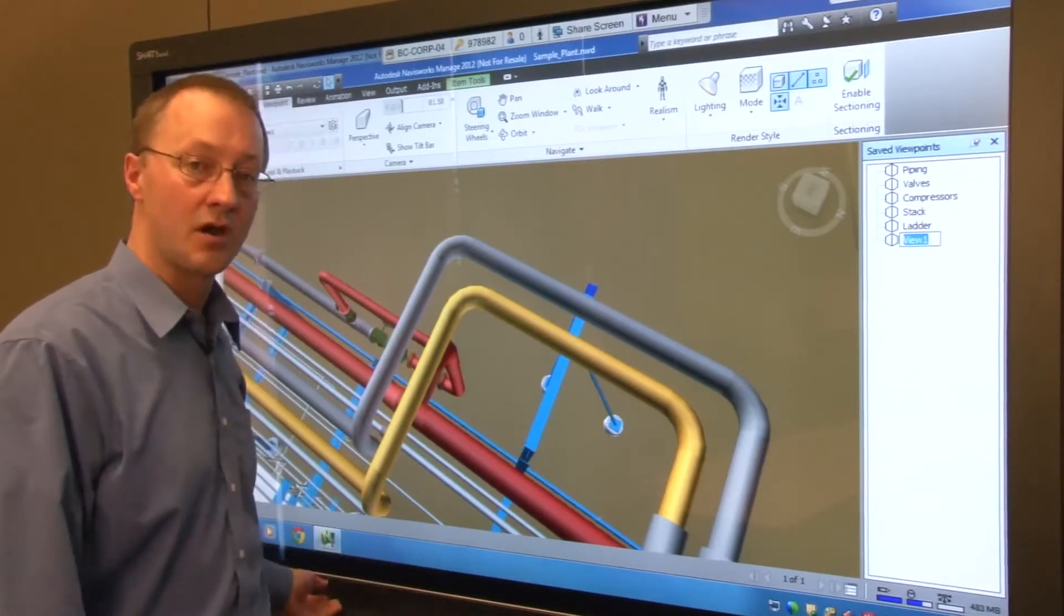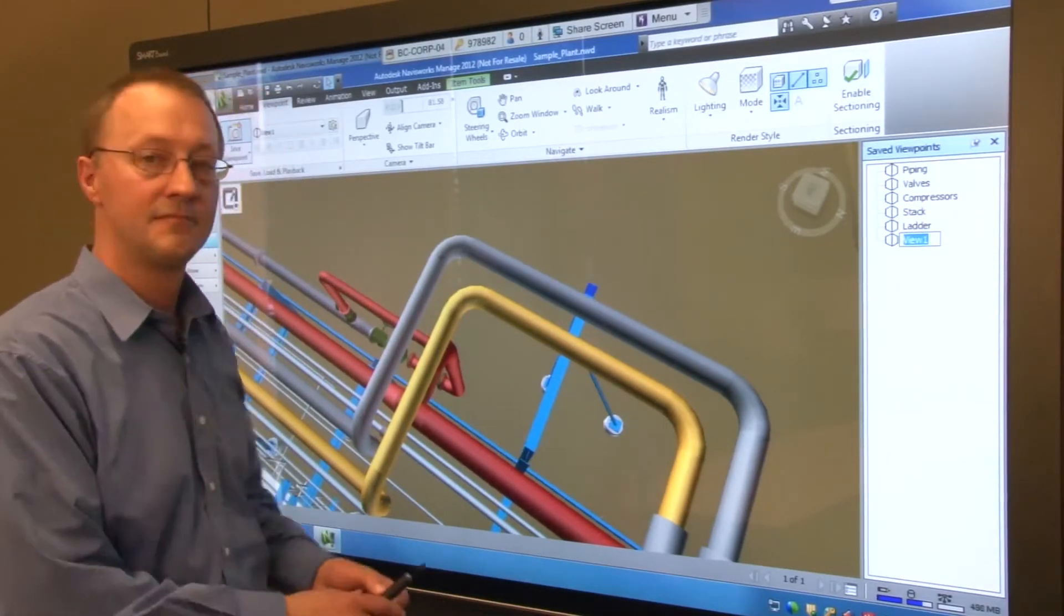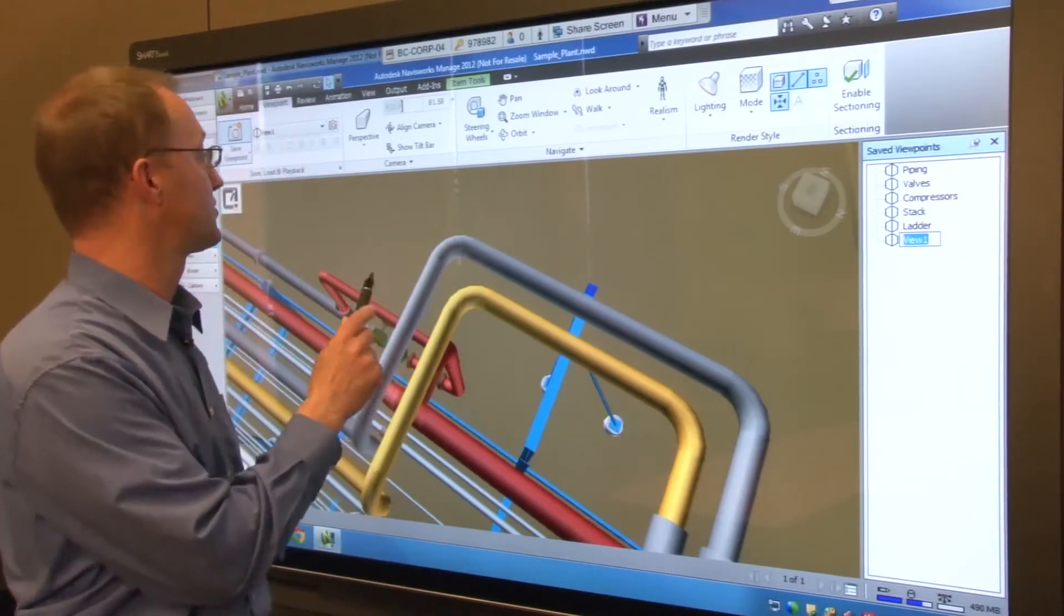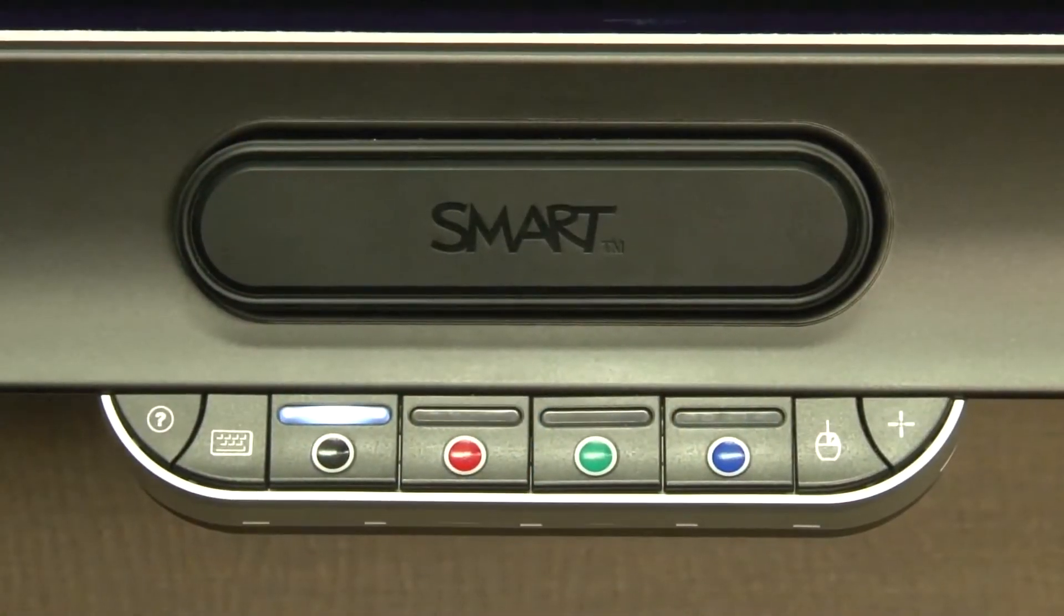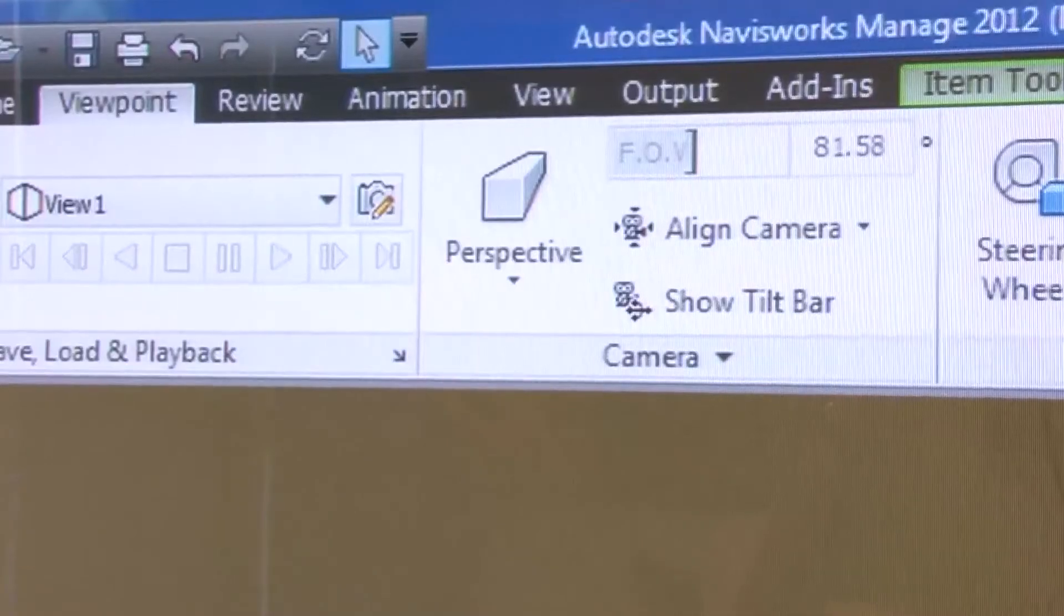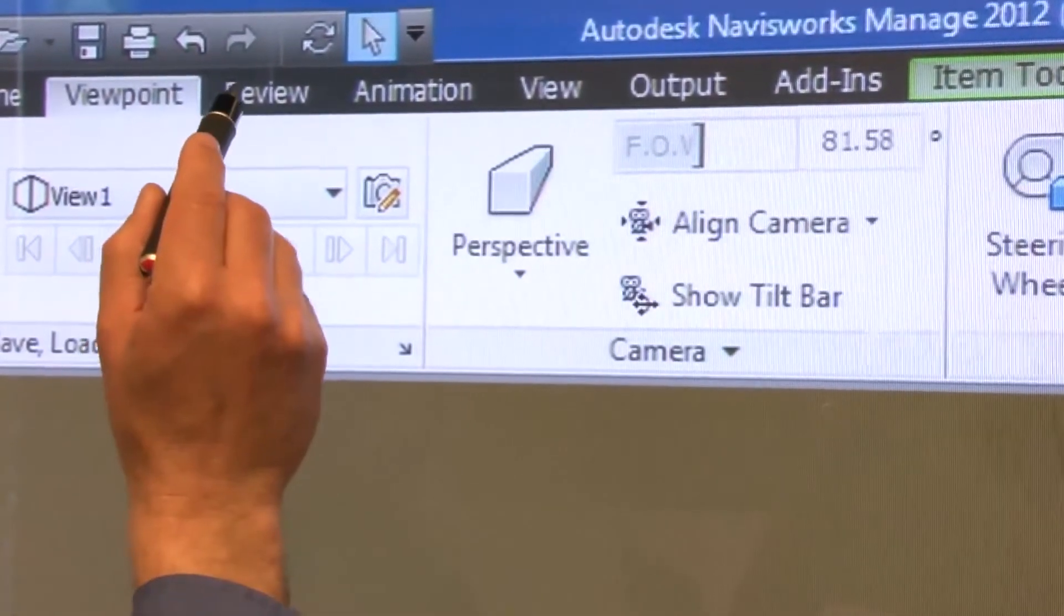You can now make redline markups directly in the model. Picking up the pen from the pen tray automatically sets Navisworks to the freehand annotation tool. You can select the color of your annotation by using the pen tray color buttons or you can select a color directly from the Navisworks palette.